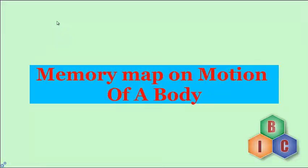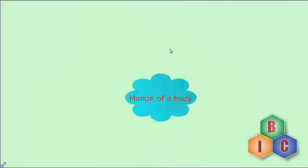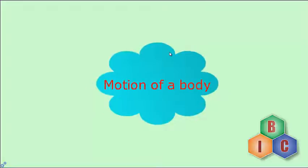Memory map on motion of a body. Motion of a body is the change in position of the body with respect to time. There are three important types of motion of a body.